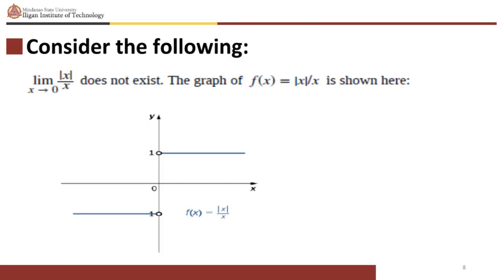Consider the following function. Notice that the limit of the absolute value of x over x as x approaches 0 does not exist. It is also clear that the function is not continuous and that the discontinuity is essential.